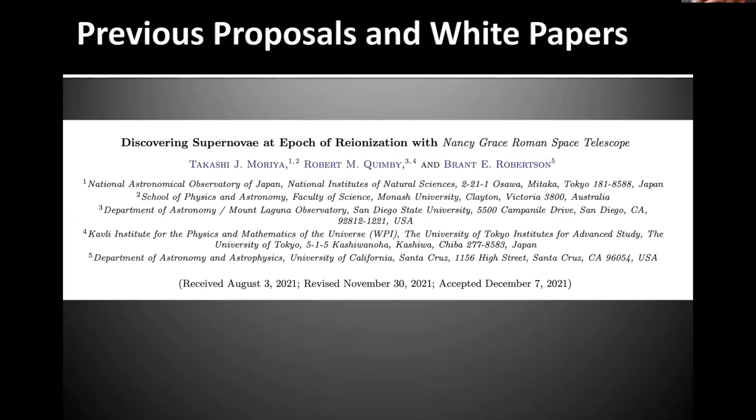At about the same time, I want to highlight that Takashi, Robert, and Brandt were writing a peer review version of this idea. Takashi presented that earlier this week, focused specifically at discovering high redshift supernovae during the epoch of reionization. That got put up on the archive right about the time we were writing the white paper, and a lot of those ideas and simulations got integrated into our proposal, and the three authors joined us as well.